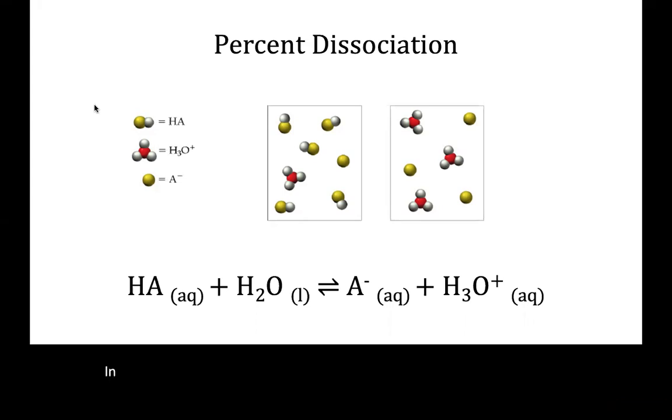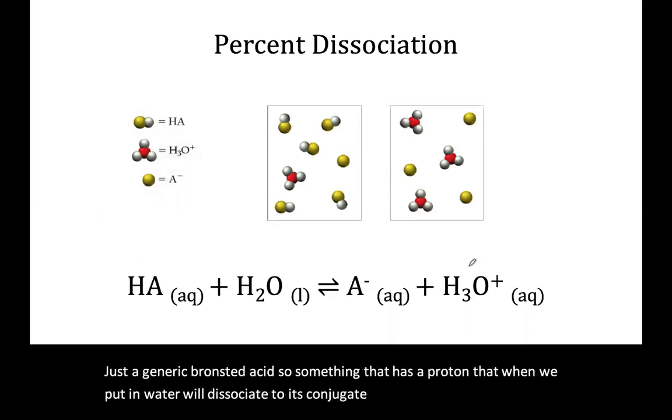In this video, we're going to talk about percent dissociation of acids. We're first going to look at a generic Bronsted acid, something that has a proton that when we put in water will dissociate to its conjugate base and form H3O+.